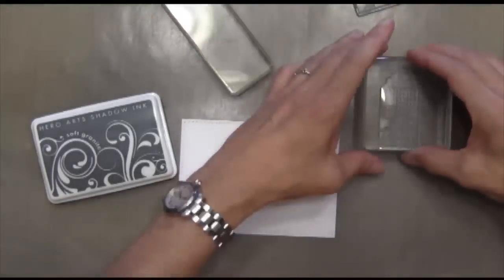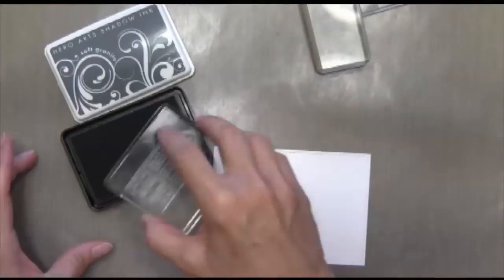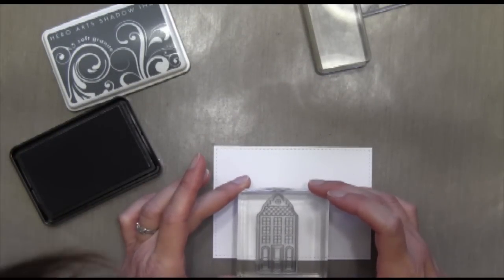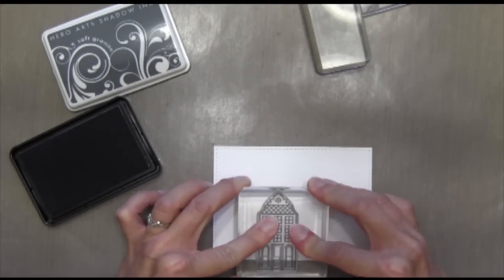Then I'm going to take some Hero Arts Shadow Ink in Soft Granite. There's three houses in this set, so I'm going to take one of them and stamp it at the bottom here.